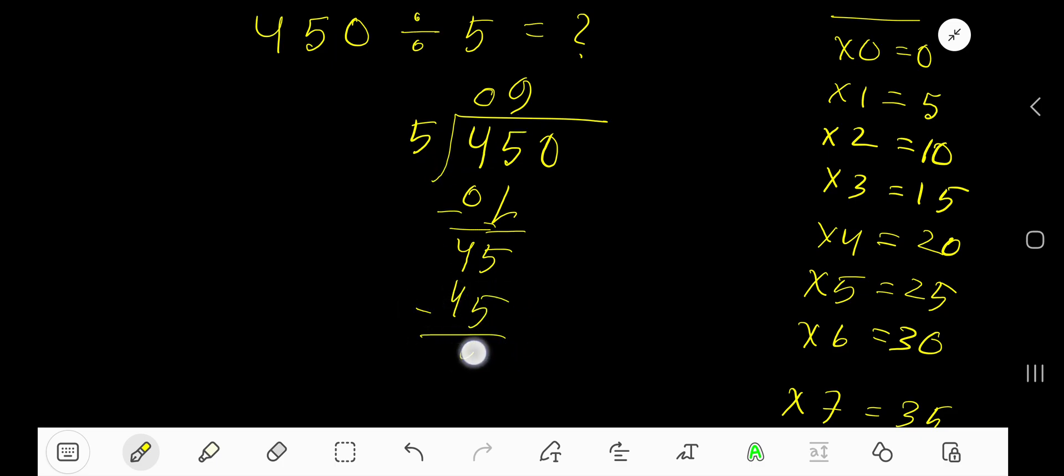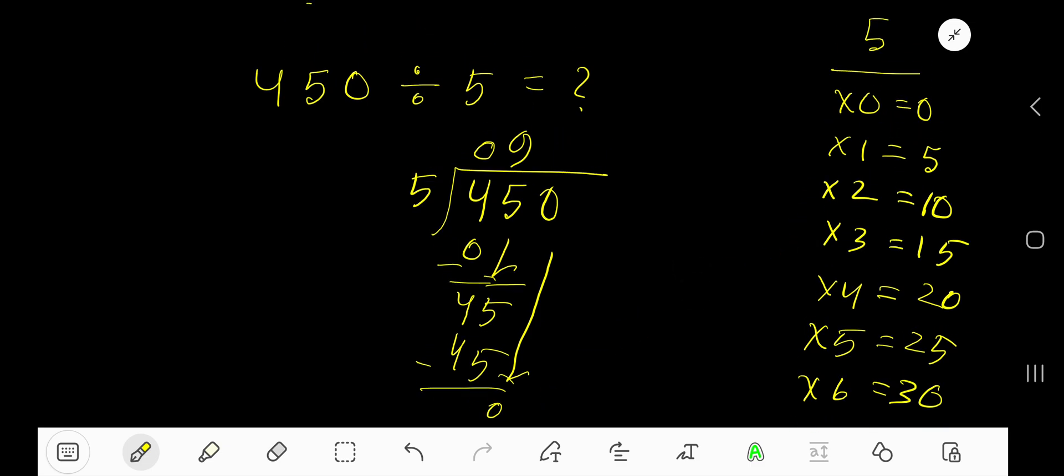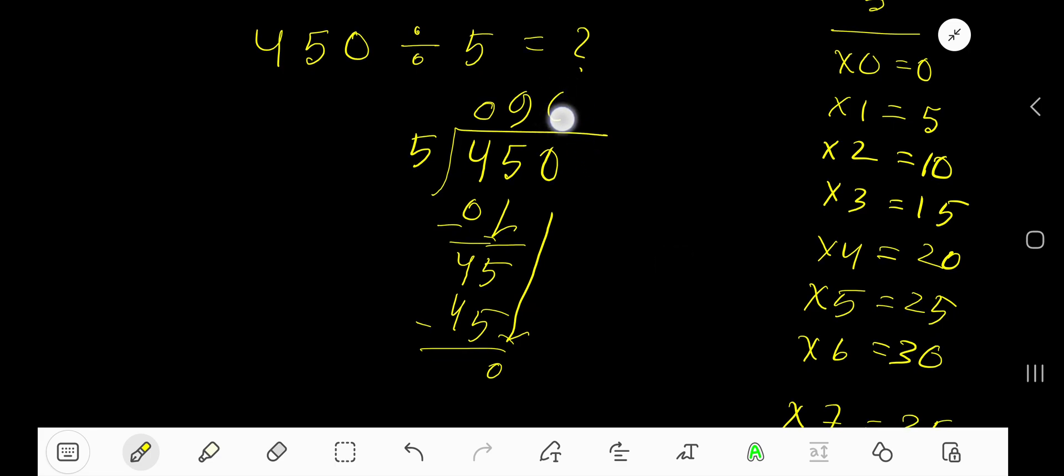Bring down this 0. 5 goes into 0 how many times? 5 goes into 0 zero times. Write 0. 0 times 5 is 0. Subtract, you get 0. 90 is our answer.